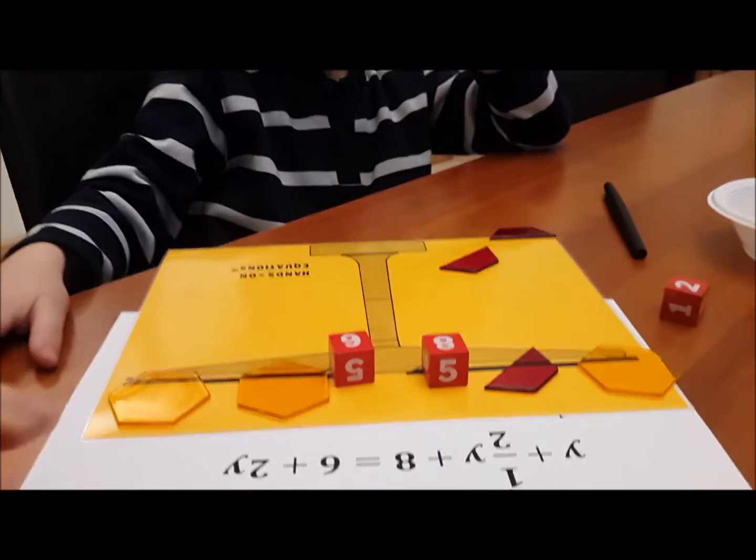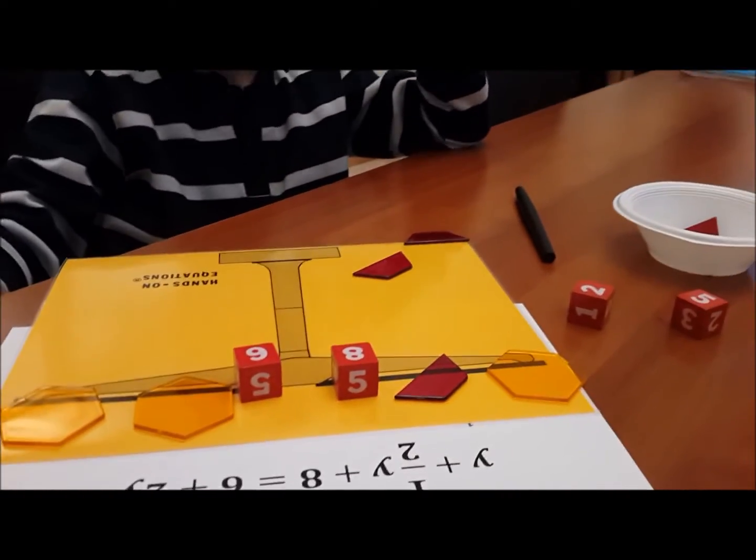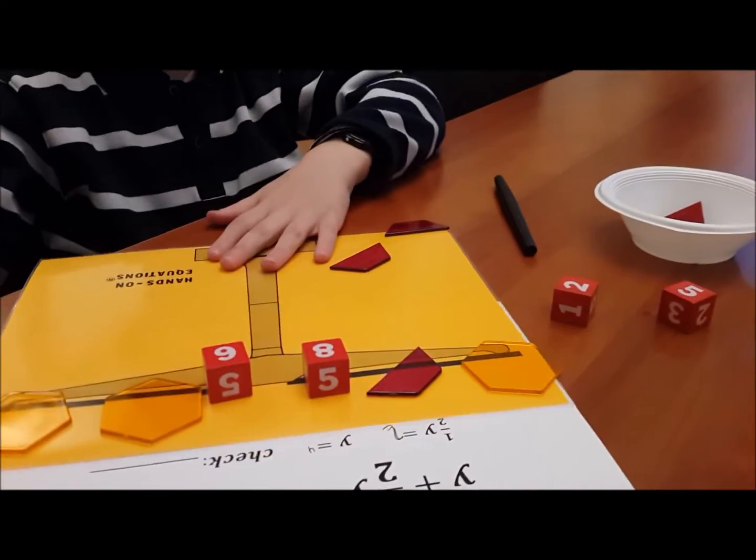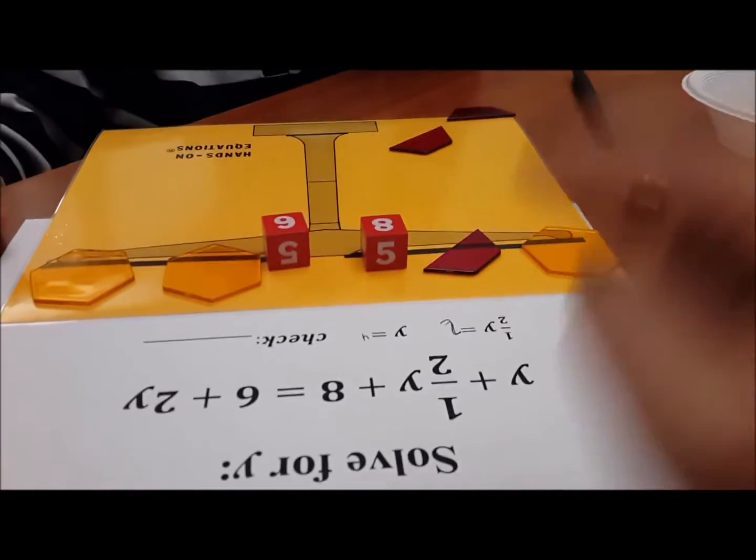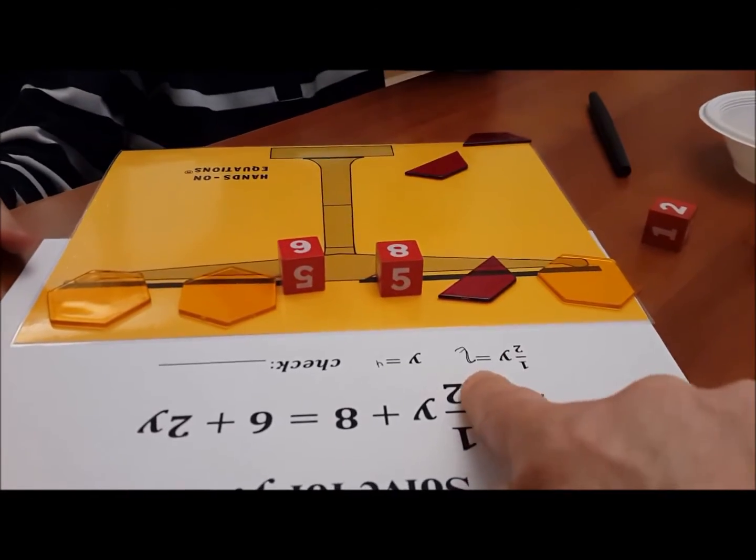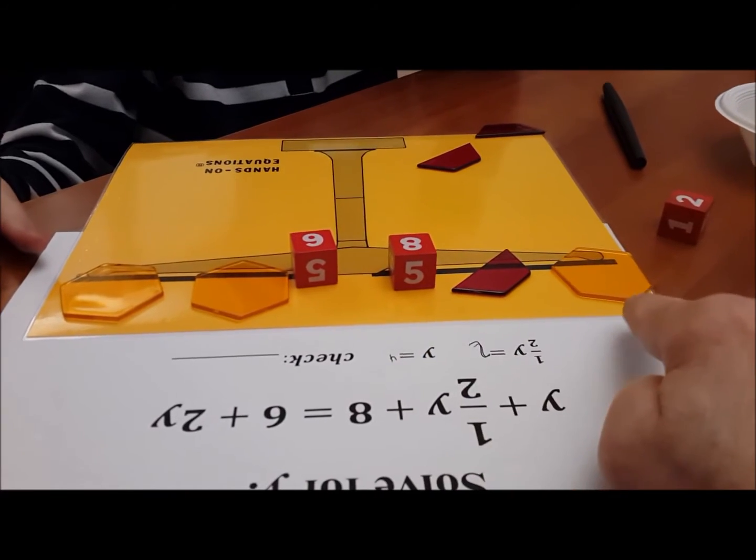Now, in order to do the check, we need to pull down the scale a little bit. Okay, so we've said here that half the yellow block is two and the yellow block is four.